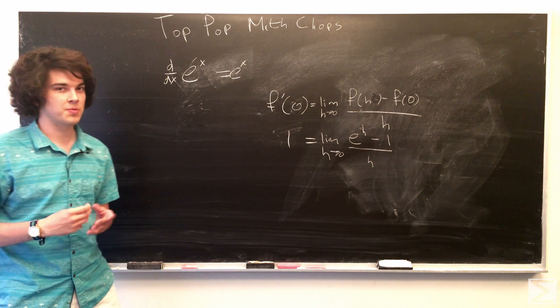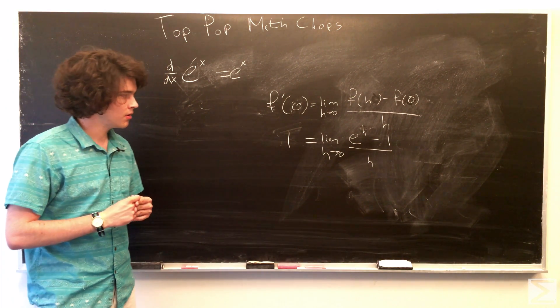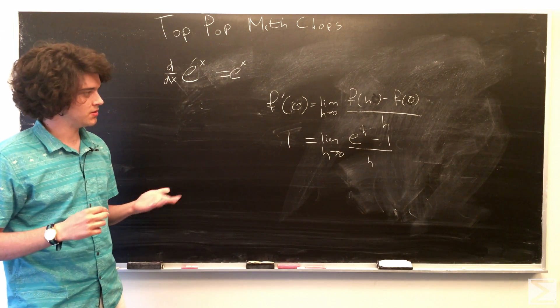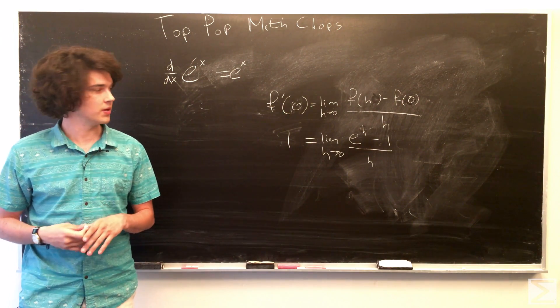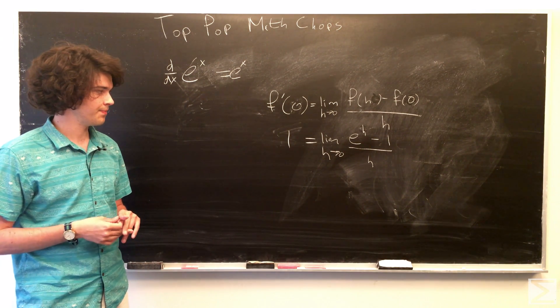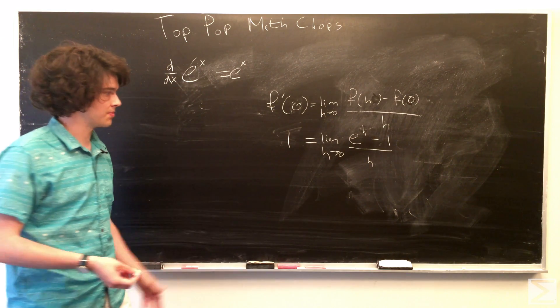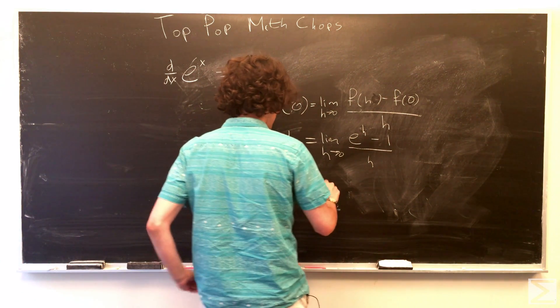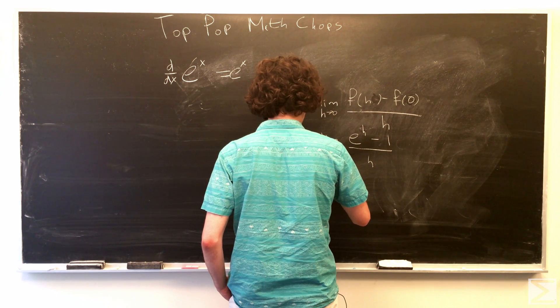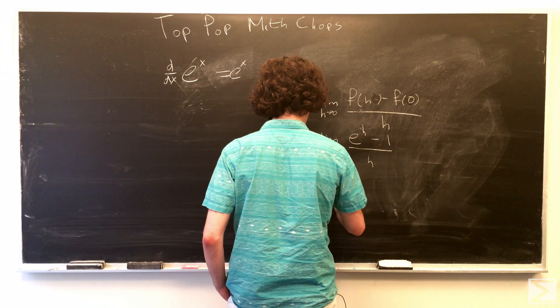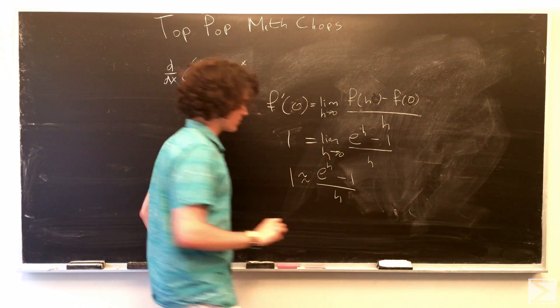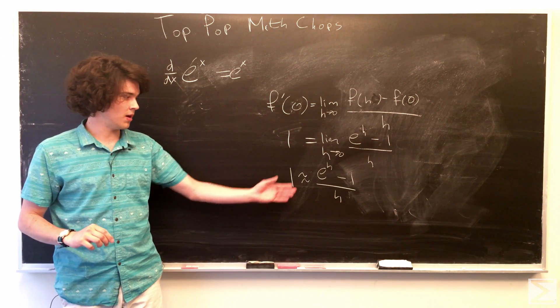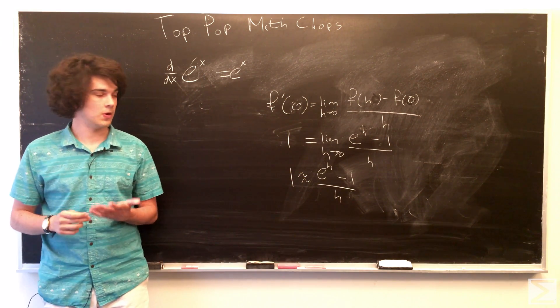And, here's where the proof becomes a little more casual. We just want to substitute h for some small number. So, when h is small, 1 is equal to e to the h minus 1 over h.